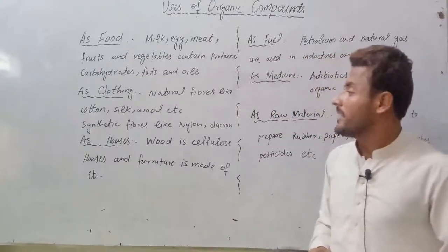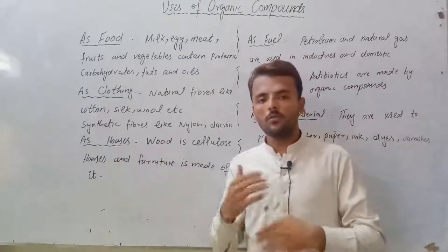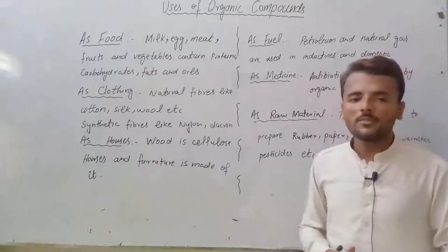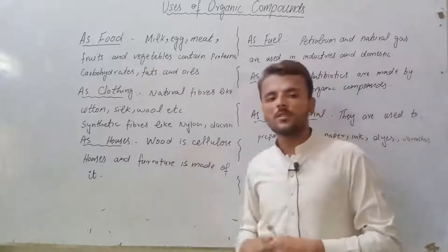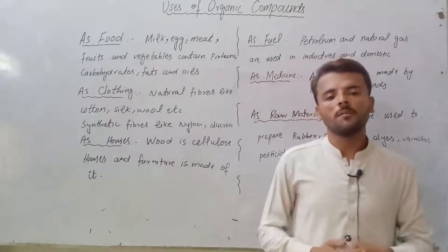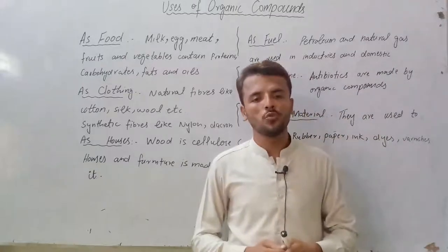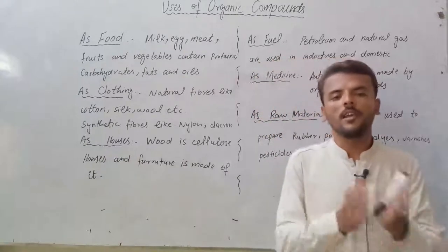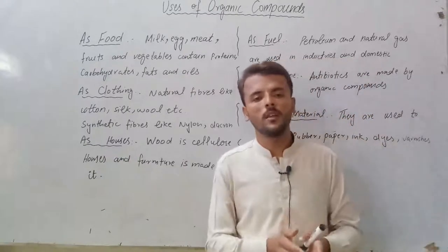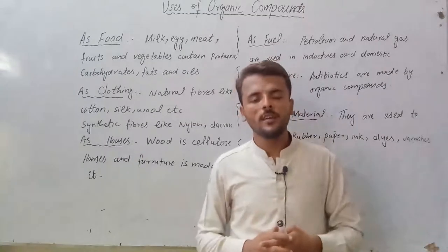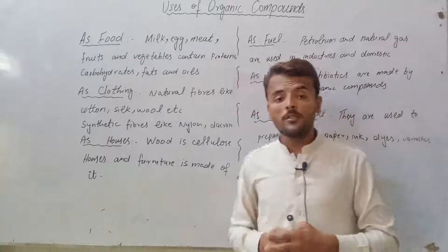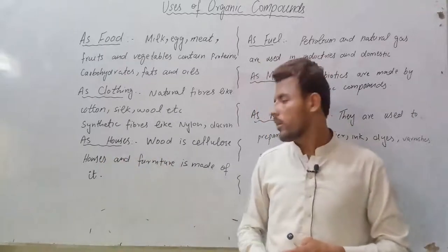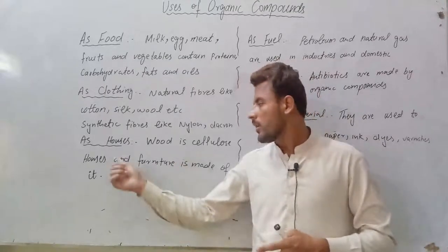As houses, we also use organic compounds. Cellulose is an organic compound made of carbon and hydrogen. We use cellulose to create houses — windows, chairs, and tables are made of wood. This wood is very much involved in organic compounds.